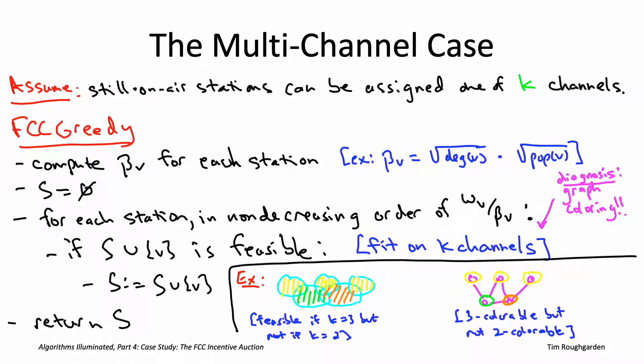So once again, we took a computational problem that naturally arose in this application in the FCC incentive auction. And before thinking about algorithms, we asked the question, do we recognize this as a problem that we're already familiar with? And once again, here the answer is yes. The feasibility checking that you do in each iteration, checking whether a new station can be accommodated on the air along with all the other stations you've already committed to, that feasibility checking question is exactly a graph coloring problem. And just like when we recognize the optimization problem with one channel as weighted independent set, recognizing feasibility checking with K channels as graph coloring is not necessarily good news.